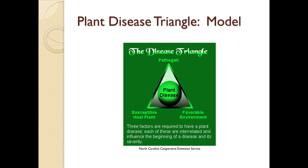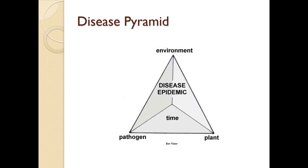Something to really consider: the pathogen is often already present. You're thinking about the susceptible host plant and the favorable environment. The susceptible host plant may be something under stress or simply a plant that normally gets that disease. The favorable environment is the one you probably have the most control over, and usually water is involved. We have the disease pyramid — time is added now because, as you'll see with oomycetes, it could take two hours or nine hours for infection. This is one reason we want to do any overhead watering in the morning, so the water has a chance to evaporate.